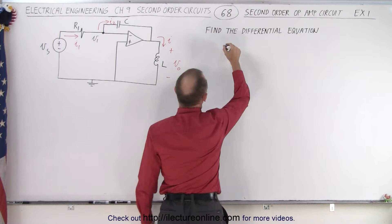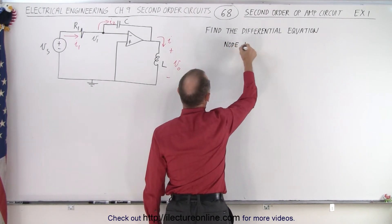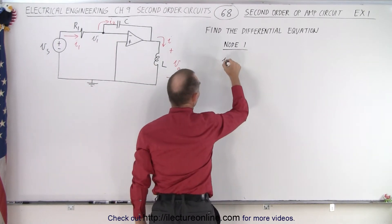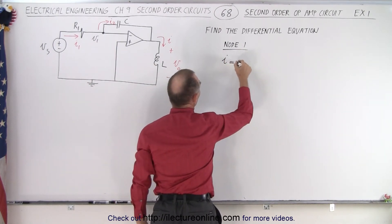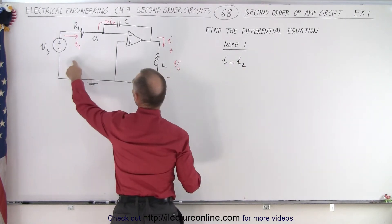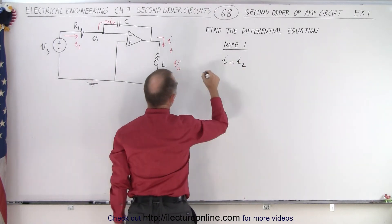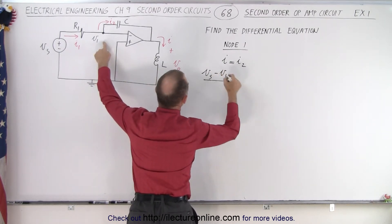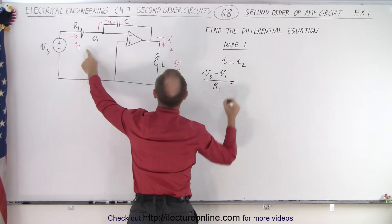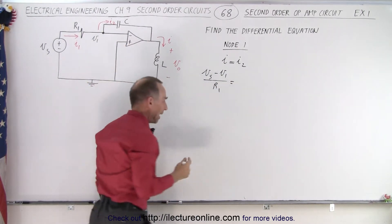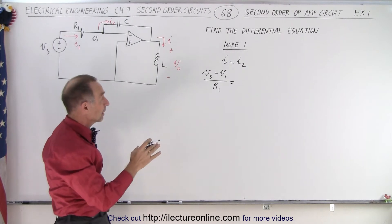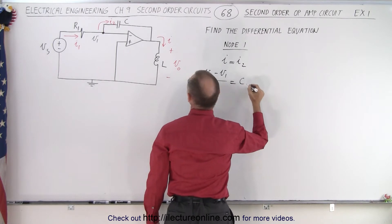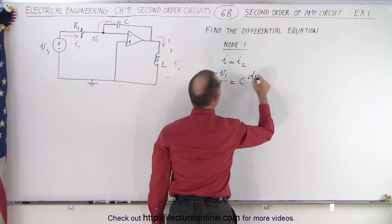Let's take a look at node 1. At node 1 we can say that the current into the node must equal the current out of the node, so I1 must equal I2. I1 can be defined as the difference in the voltage — the source voltage minus the voltage at node 1 — divided by the resistance R1. And that must equal the current through the capacitor, which can be written as the capacitance C times dV/dt.